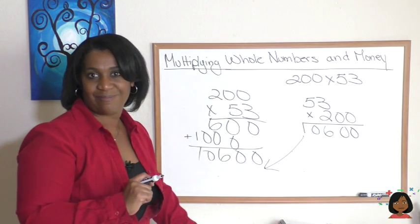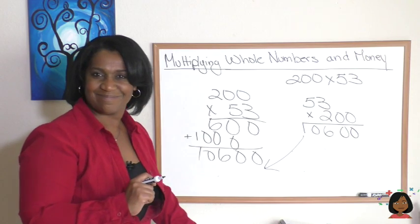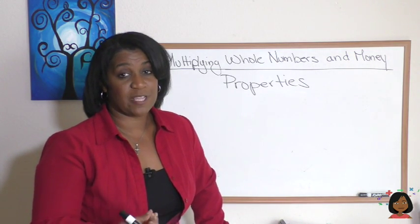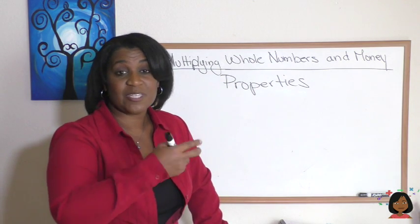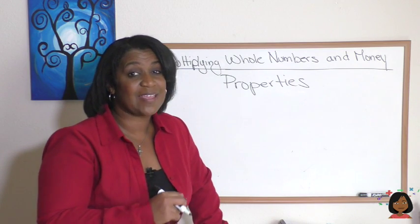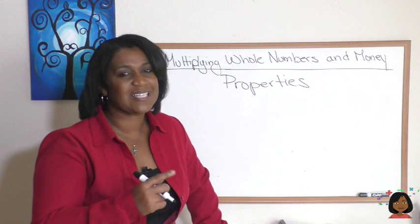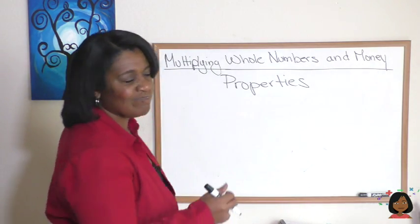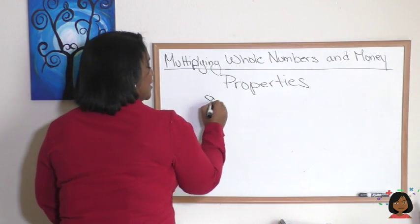We have learned earlier about the commutative property. Commutative property means that you can take your two addends, add them in any order, and still get the sum. Does that work for multiplication? Let's take a look.